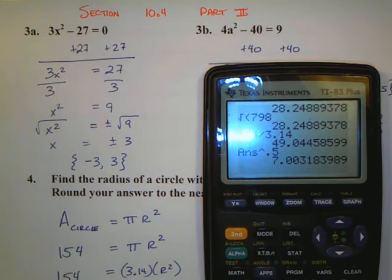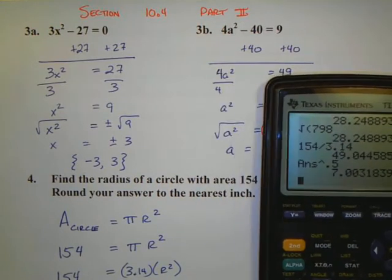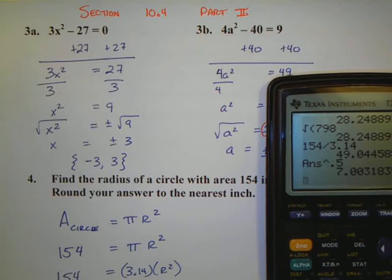Now I want to take the square root of both sides to try to get my actual answer. Remember, you have a plus or minus when you take the square root of both sides. So I'm going to raise this to the power of 1 half. So I have plus or minus 7.003 equals r.